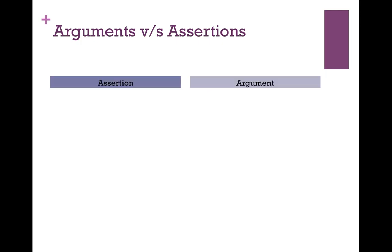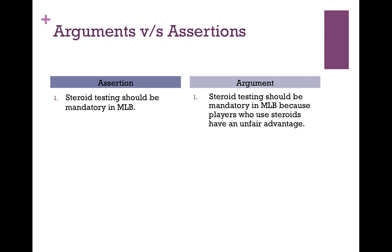For example, take the claim: 'Steroid testing should be mandatory in Major League Baseball.' That's a claim — but as it stands, it's just an assertion, because no evidence is provided. To make it an argument: 'Steroid testing should be mandatory in Major League Baseball because players who use steroids have an unfair advantage.' Notice now I've provided an argument. The reason is: players who use steroids have an unfair advantage — and that gives you a reason to think the conclusion is actually true.